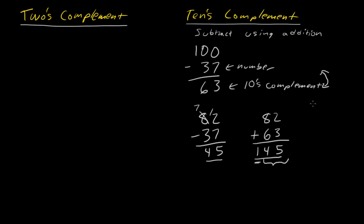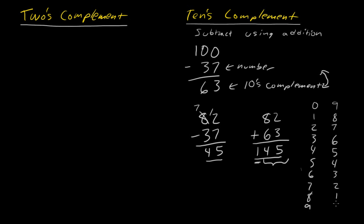Here's what I mean. We have digits 0 through 9. The complement of each digit would be: 0 pairs with 9, 1 with 8, 2 with 7, 3 with 6, 4 with 5 — these are all symmetrical. By the way, these are the 10's complements of each other. So zero is the 10's complement of nine, and vice versa. There's a clear symmetry here, and these relationships are bi-directional.